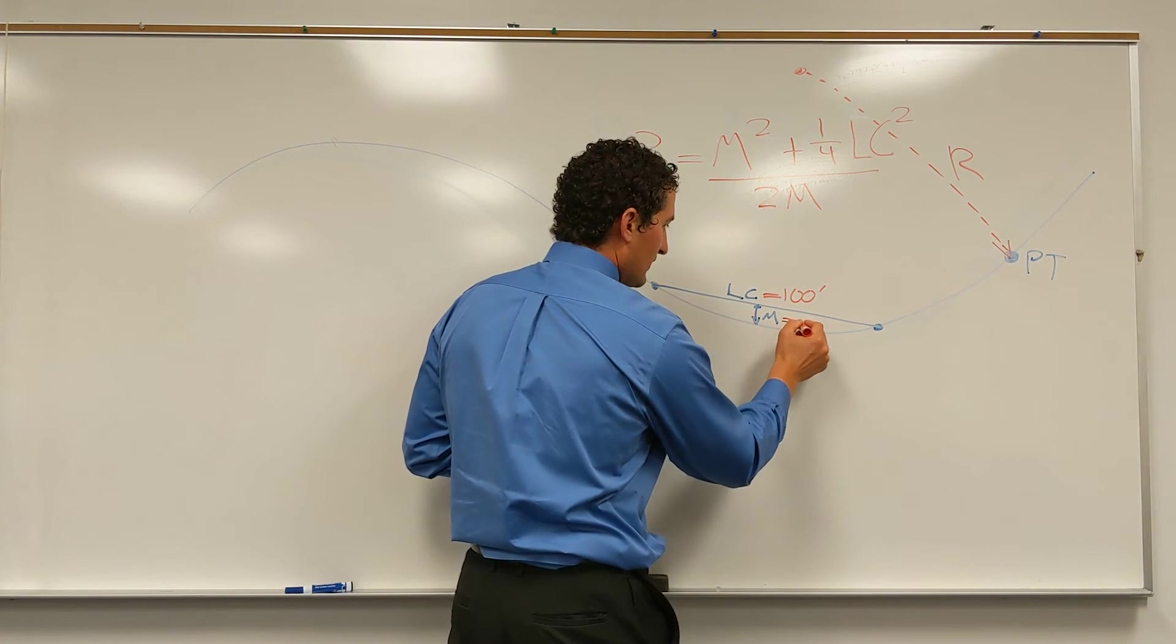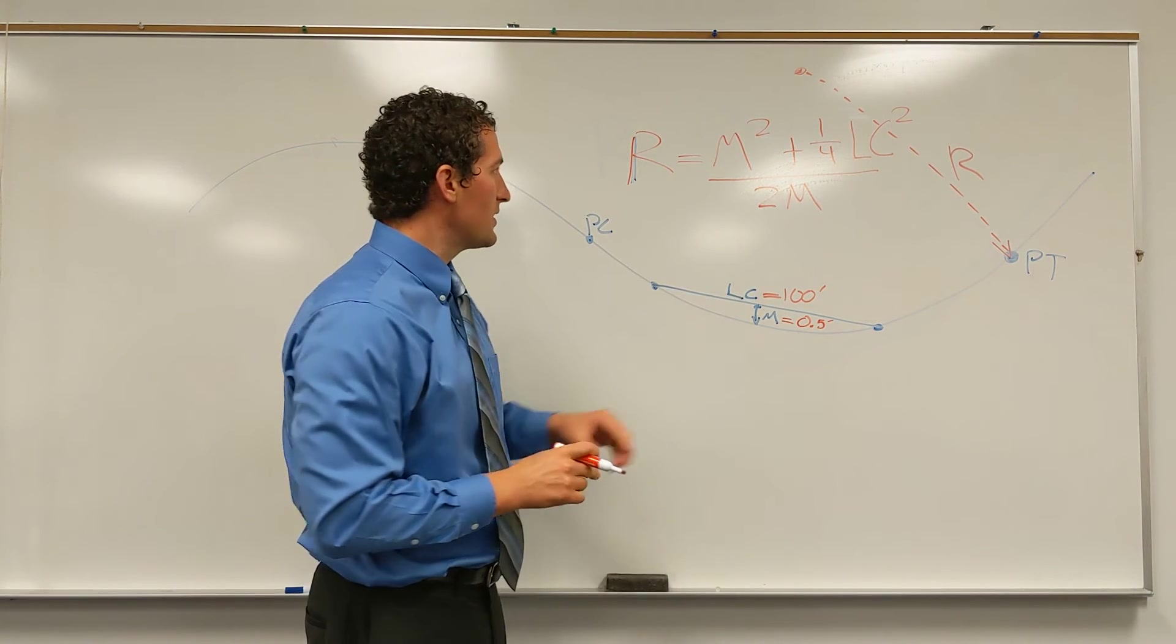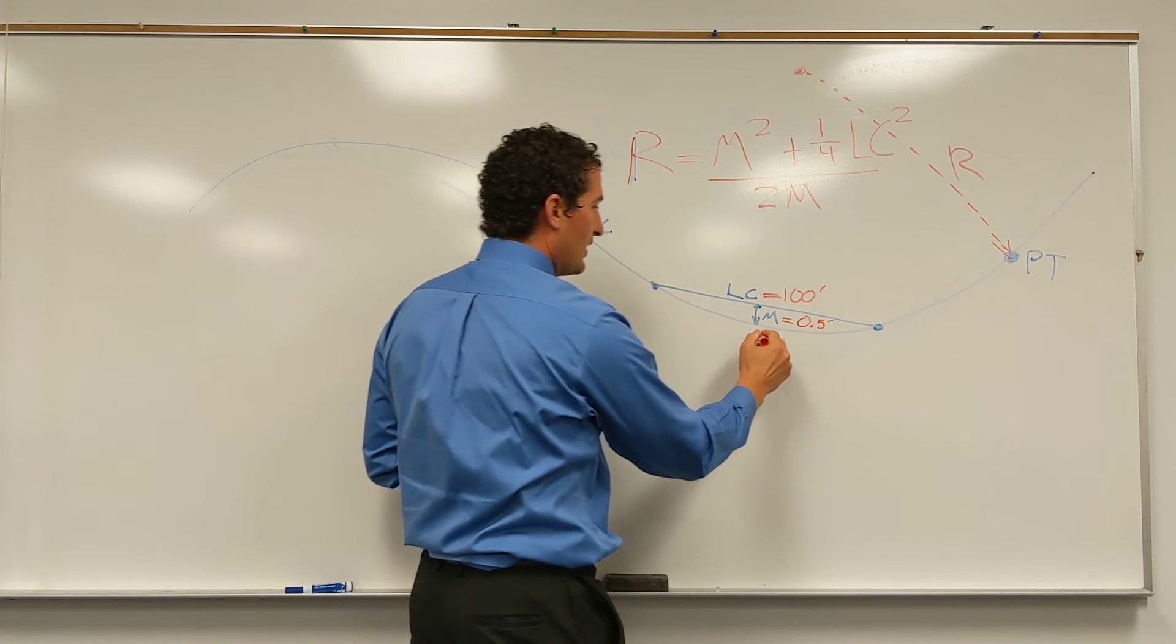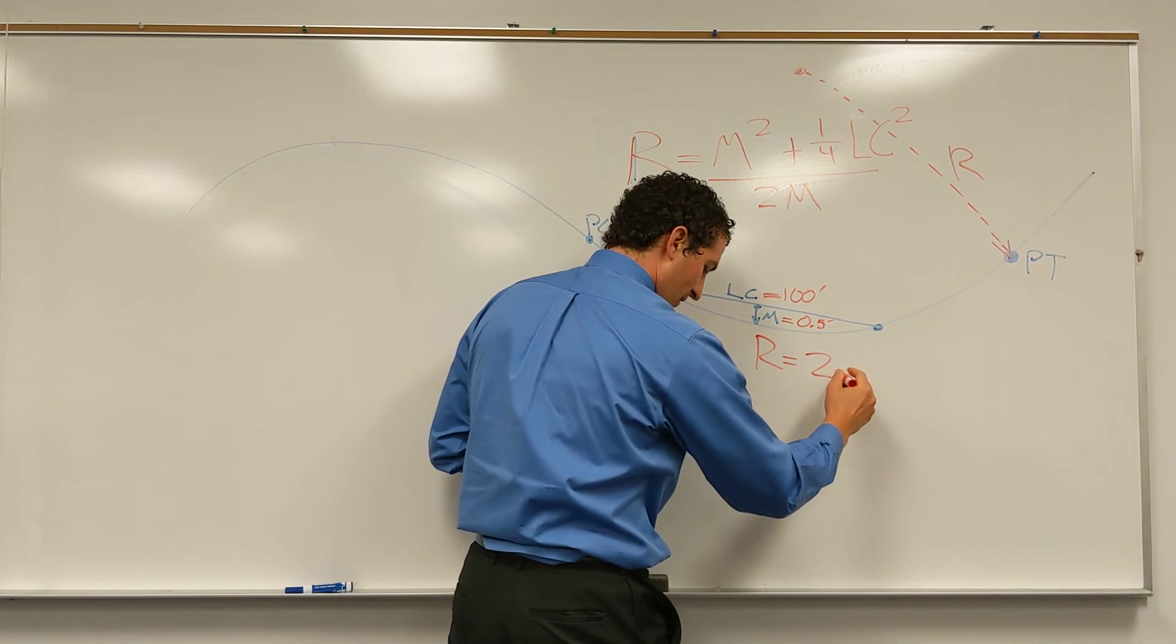In the case of, let's say that we have six inches or a half of a foot for our middle ordinate, we plug that into our equation, we will get a radius of about 2,500 feet.